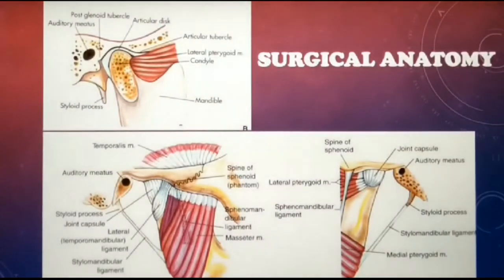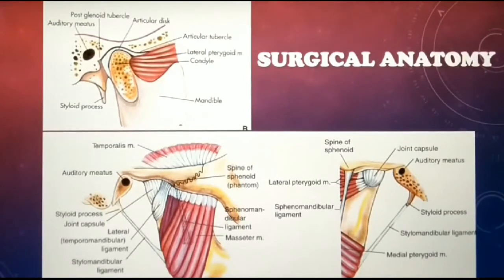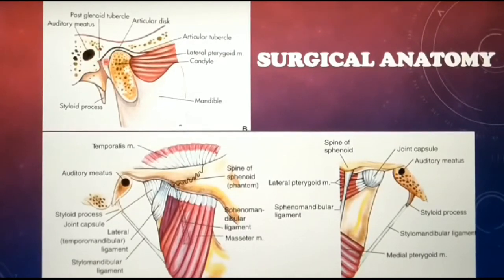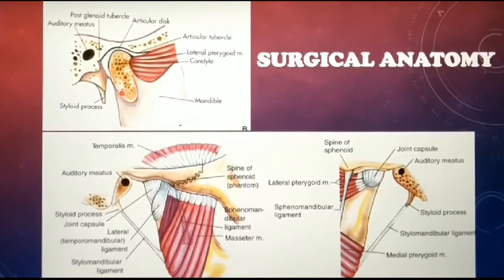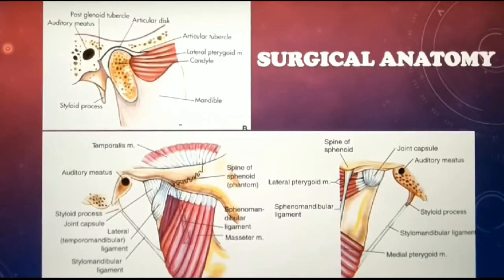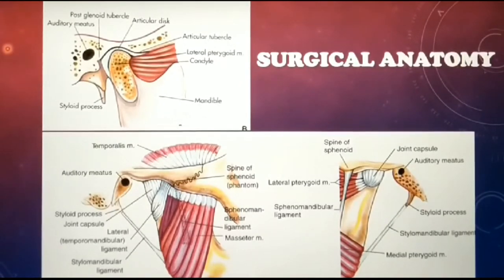Let's have a quick look at the anatomy of the temporomandibular joint. TMJ basically has two components: a passive component and an active component. Passive components are the glenoid fossa, which is part of the temporal bone; the condyle, which is part of the mandible; the articular eminence; capsules and ligaments; and the articular disc. Of these, the glenoid fossa, condyle, and articular eminence are hard tissue, while the capsules, ligaments, and disc are soft tissue.